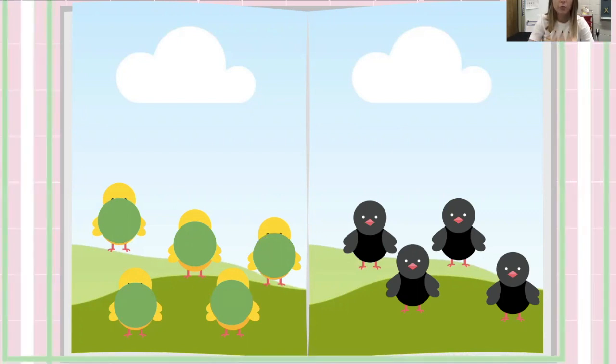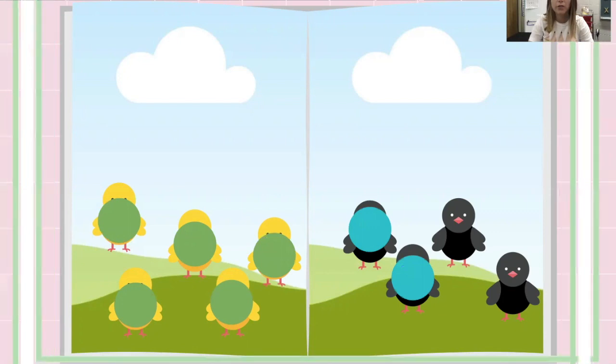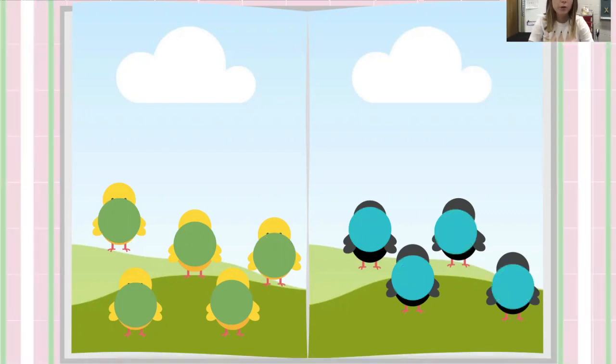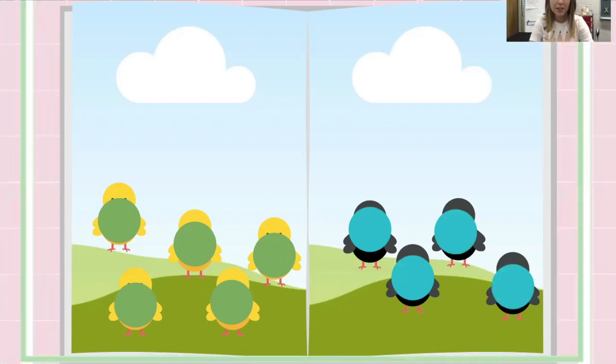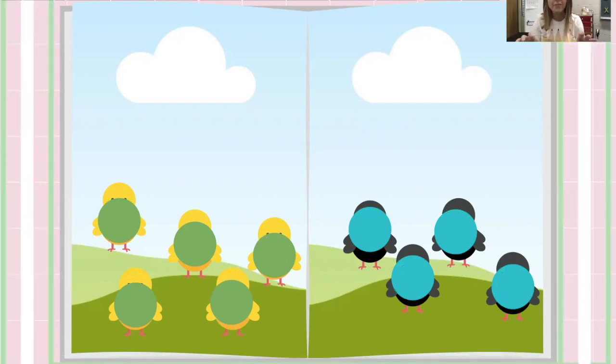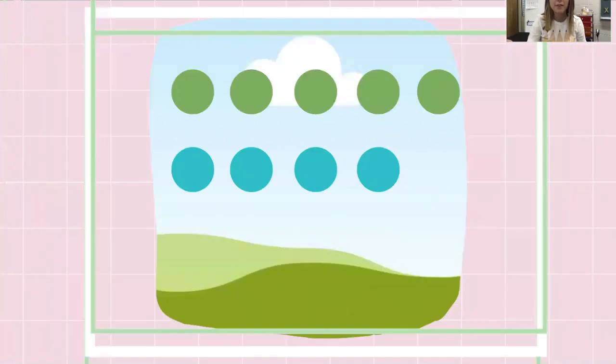And then I could have one, two, three, four blue counters to match my black chicks. Once I have a counter to match each chick, I'm going to line them up like this.